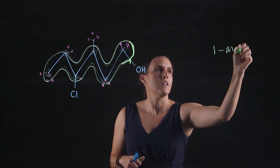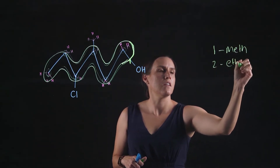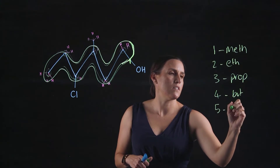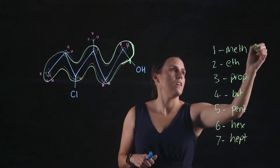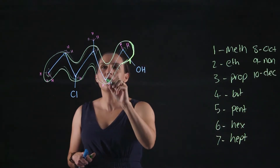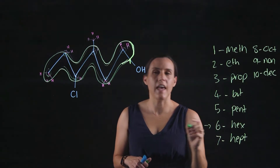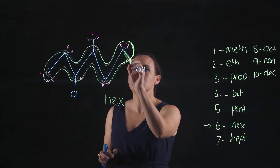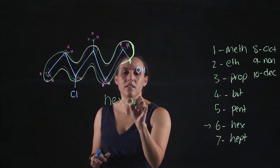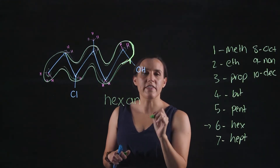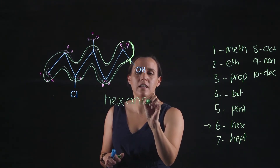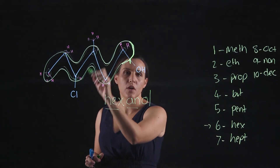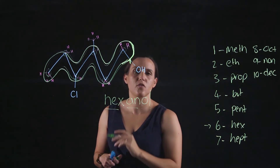Remember: one is meth, two is eth, three is prop, four is but, five is pent — so we've got six carbons, which gives us hex. Now they're all single bonds going between each of those carbons, so it's a hexane. I put the 'an' but I don't write the 'e' in there because I have a functional group and it's an alcohol, so I write 'ol'. Hex accounts for the number of carbons and the connections, and 'ol' is the functional group.